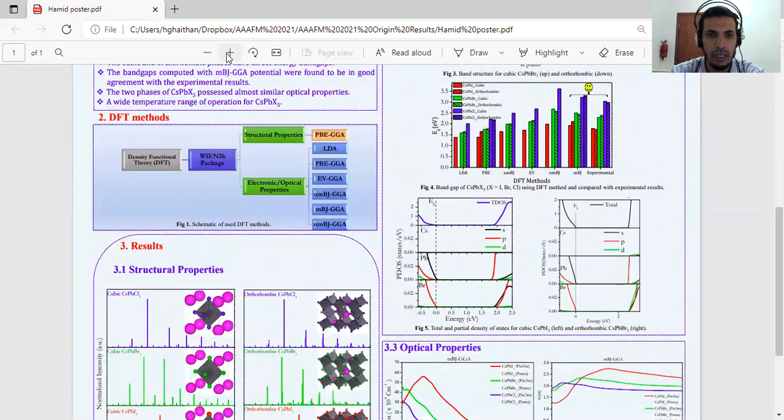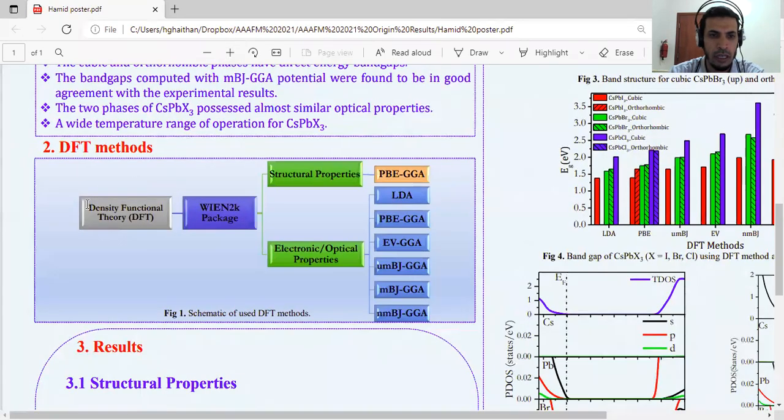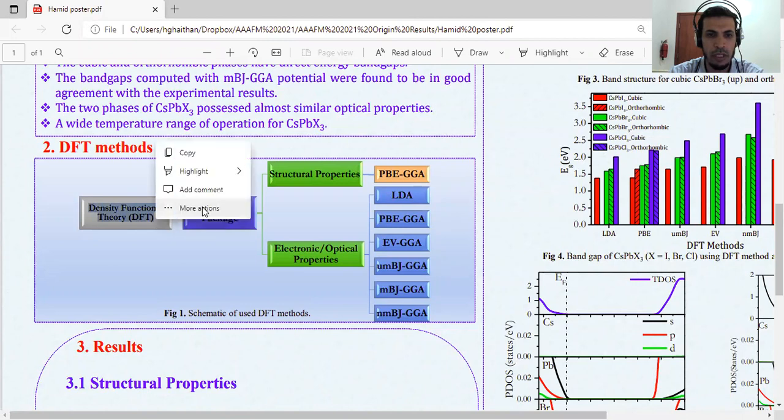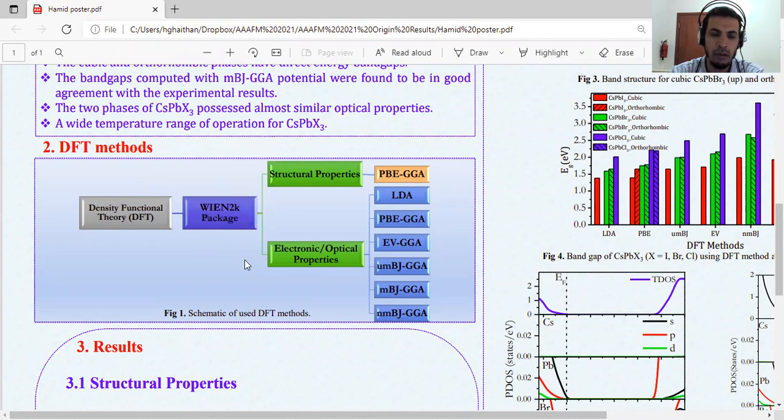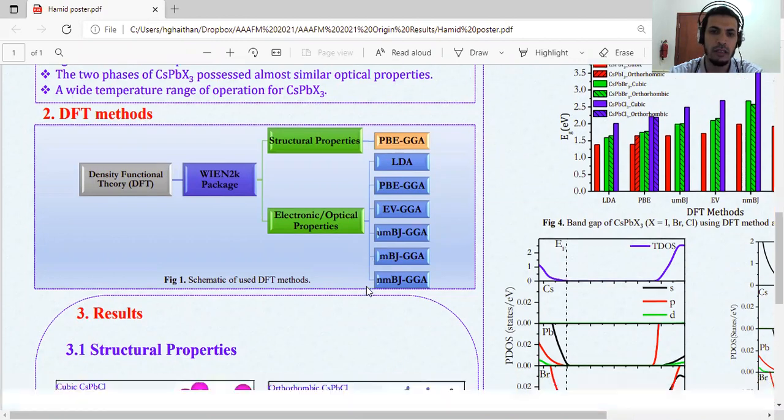And you can see here our method. We used density functional theory DFT, but we selected the WIEN2K package because there are many codes. For structural properties, we used PBE GGA. And for electronic and optical properties, we selected these six methods.